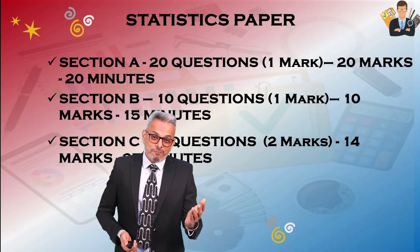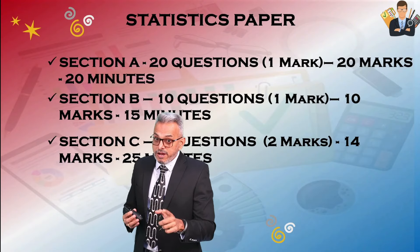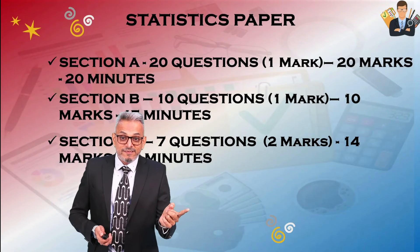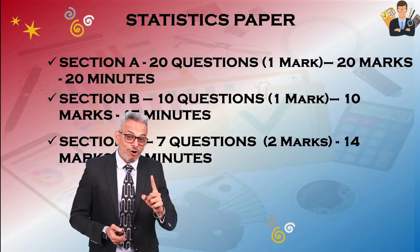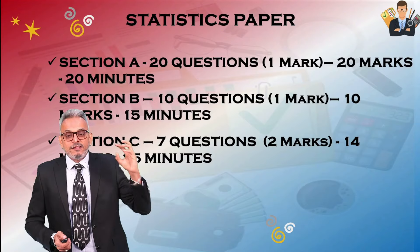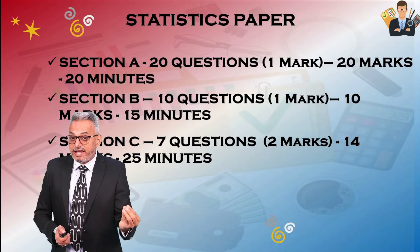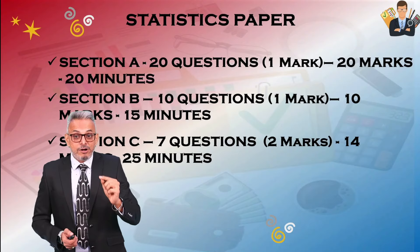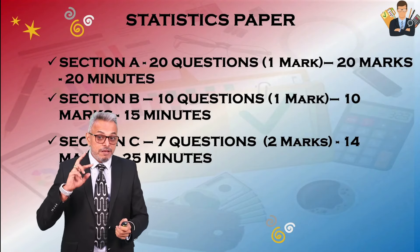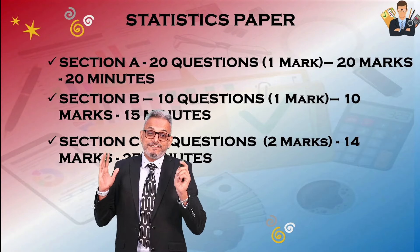In Section C you have nine questions and need to attempt seven — 14 marks. Section C can be a mix of number-based and theory questions. Many students ignore theory and focus only on calculations, but when theory comes and you are unprepared you won't be able to write in your own words due to the technicalities involved. The good part is you have options, so you can plan around it — subject to having prepared everything.